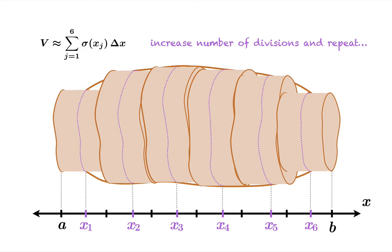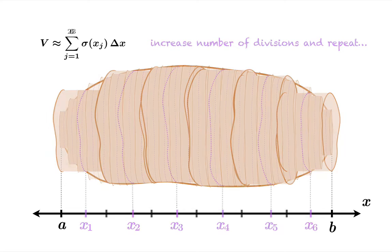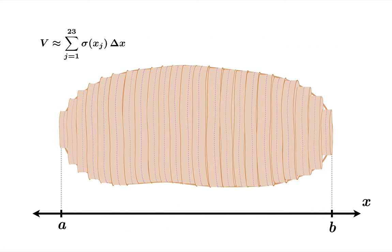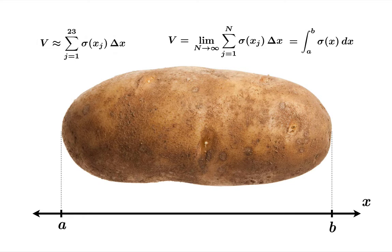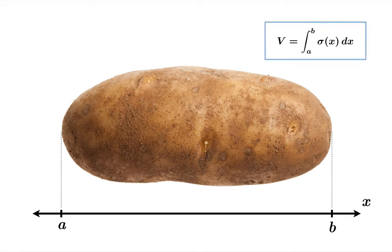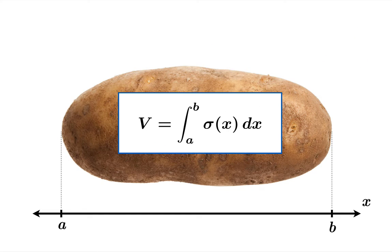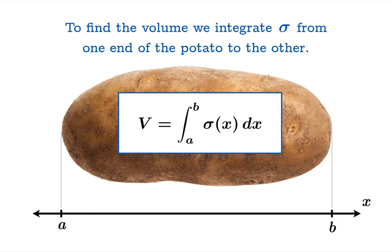Of course, we can increase the number of divisions and repeat to get better approximations. Here's the diagram you get when you use, say, 23 divisions. You could chop this up into finer and finer bits, the interval a to b into finer and finer bits. But what we're really looking for is the limiting value of this process, which gives us an integral by definition. And so we wind up integrating the cross-sectional area from a to b. And that's the answer to our question. To find the volume, we integrate the cross-sectional area sigma from one end of the potato to the other. And that's how we're going to use the cross-sectional area to find the volume.